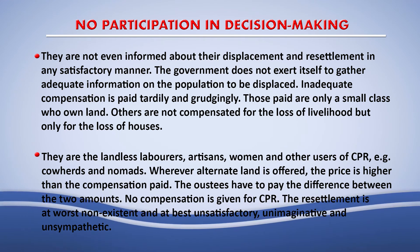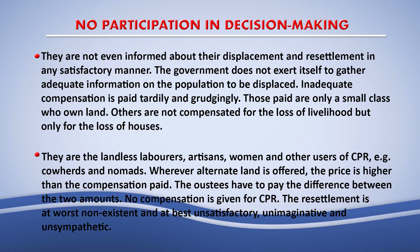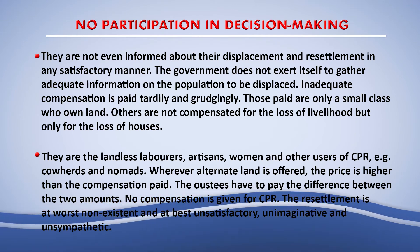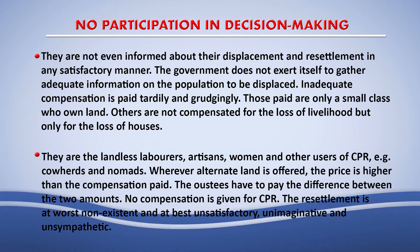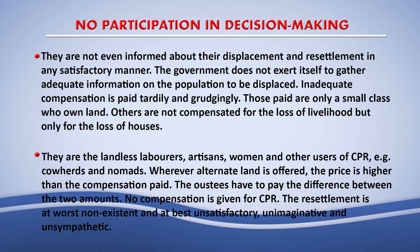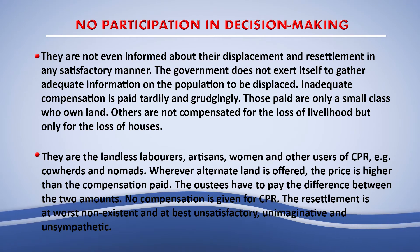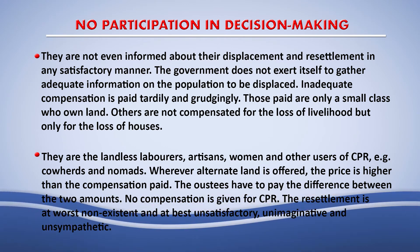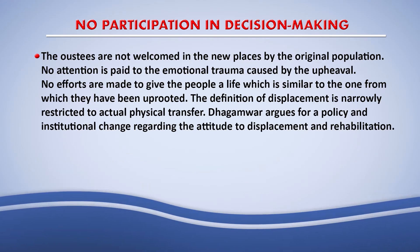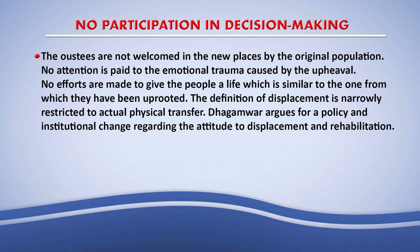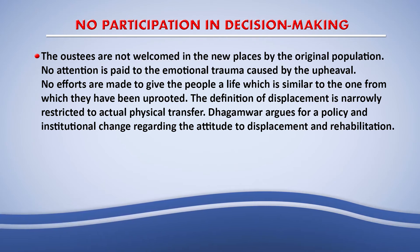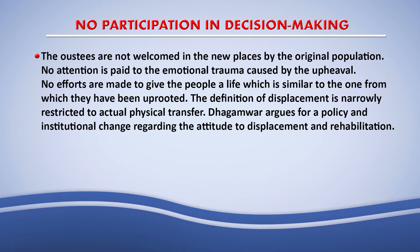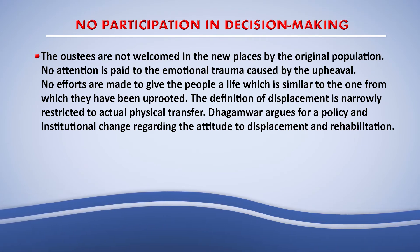Those compensated are only a small class who own land — landless laborers, artisans, women, and others such as nomads are not compensated for the loss of livelihood but only for the loss of houses. Whenever alternate land is offered, the price is always higher than the compensation paid, so even if compensation is given, the displaced cannot afford to buy land. No compensation is given for CPRs. The resettlement is at worst non-existent and at best unsatisfactory, unimaginative and unsympathetic. The displaced are not welcome in new places by the original population, no attention is paid to emotional trauma, and no efforts are made to give people a life similar to the one from which they were uprooted.